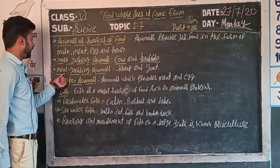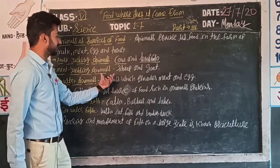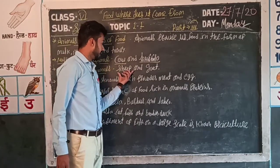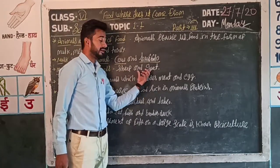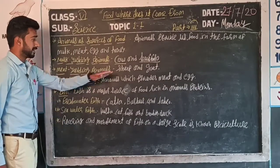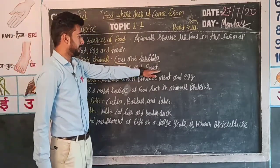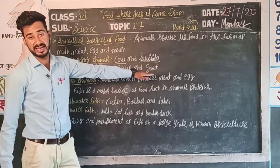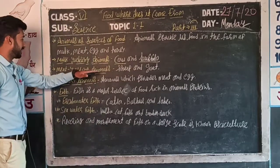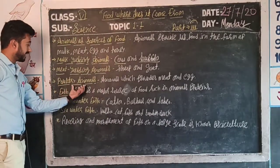Next, meat-yielding animals - the animals which provide meat - which animals are those? Sheep and goat. From these, some also provide milk and some provide meat. Clear students.